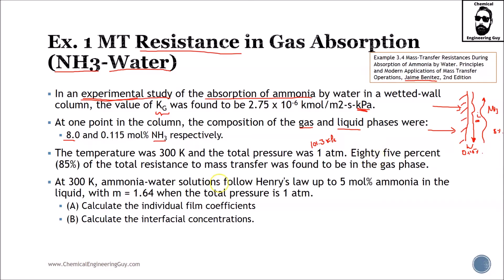85% of the total resistance to mass transfer was found to be in the gas phase, so we know that this will be essentially 85% versus 15% here.